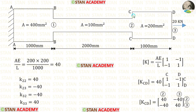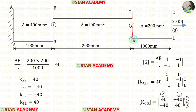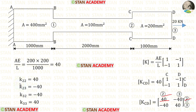Now let us make the element stiffness matrix for bar CD. Finding AE/L: area is 200, Young's modulus is 200, and length is 1000, giving AE/L = 40. Multiplying 40 with the matrix gives the element stiffness matrix. Section CC has the second coordinate, so the first row and column are denoted as 2. Section DD has the third coordinate, so the second row and column are denoted as 3. The elements are: K22, K23, K32, and K33.